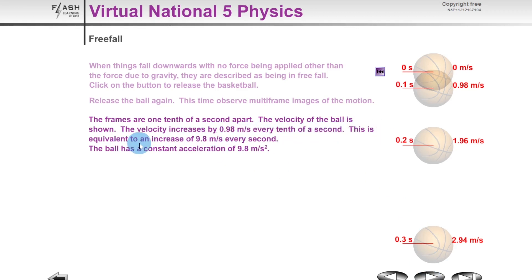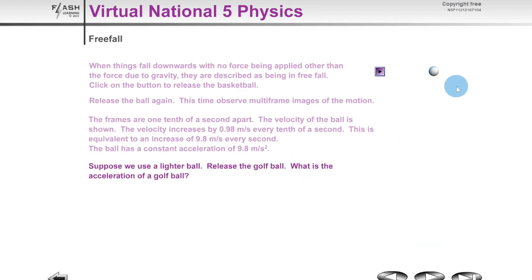We can conclude here that the velocity increases by 0.98 meters per second every tenth of a second, which is equivalent to an increase of 9.8 meters per second every second—a constant acceleration of 9.8 meters per second squared, which is acceleration due to gravity on Earth. But what happens if we replace the basketball with a ball of smaller mass, this golf ball here?